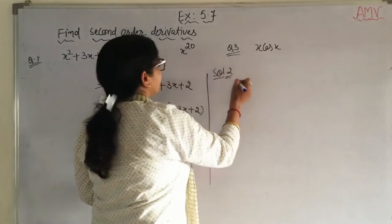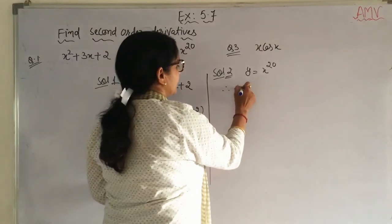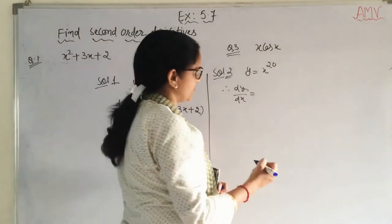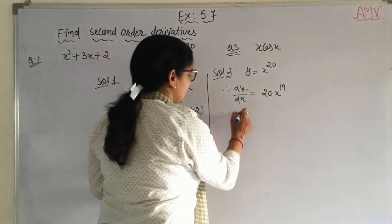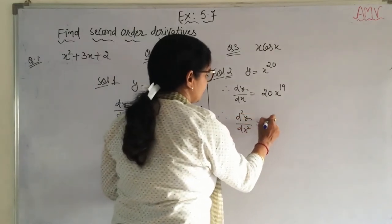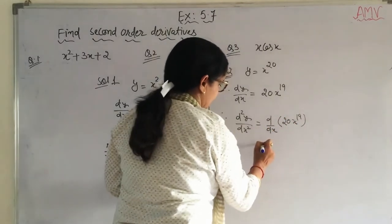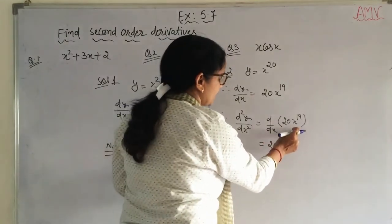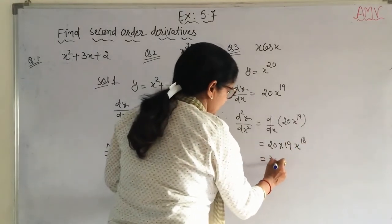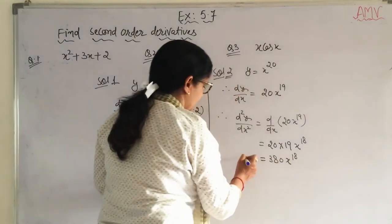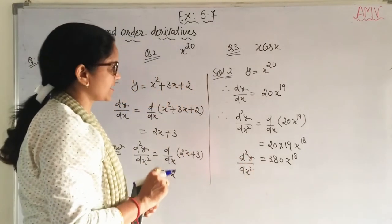Question number 2: y = x^20. First order derivative dy/dx is 20x^19. And now again d²y/dx² means d/dx of 20x^19. 20 is constant and derivative of x^19 is 19x^18, so it is 380x^18. This is d²y/dx², known as the second order derivative.